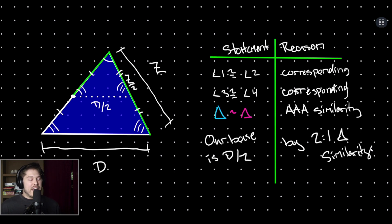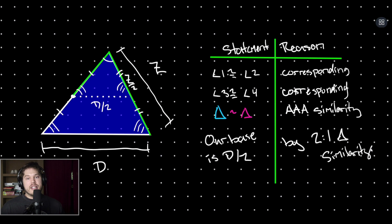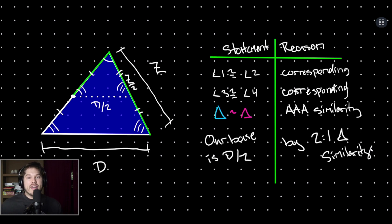And there we have it — that is us proving the triangle mid-segment theorem. We proved both that the mid-segment is parallel to the base and that it is half the distance of the base. If you found this explanation helpful, let me know down below in the comments, hit that subscribe button, and I'll see you in the next video.